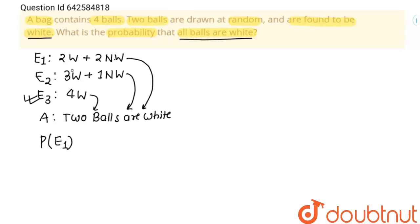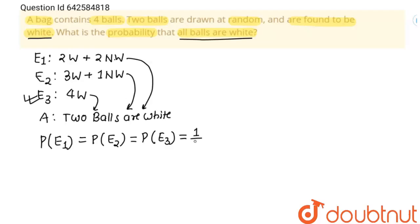The probability of E1 equals the probability of E2 equals the probability of E3, because we don't know which case applies to the bag. So for all cases the probability will be the same, and this equals 1/3.